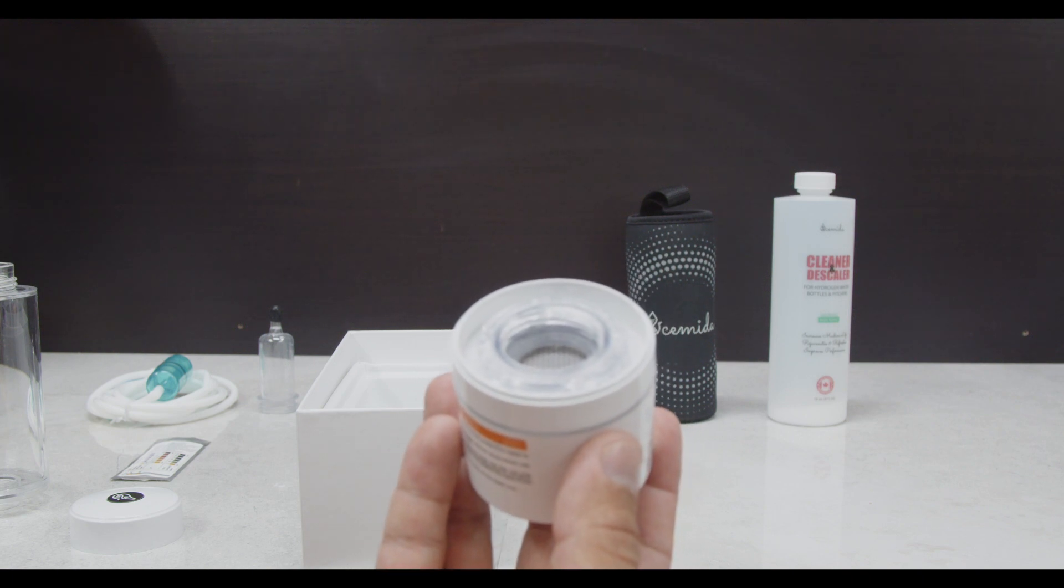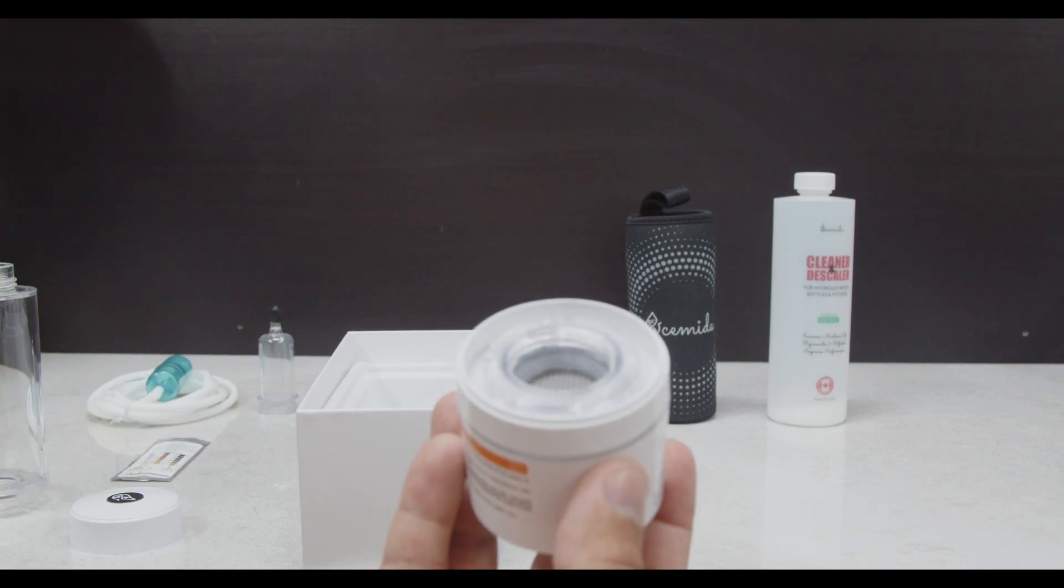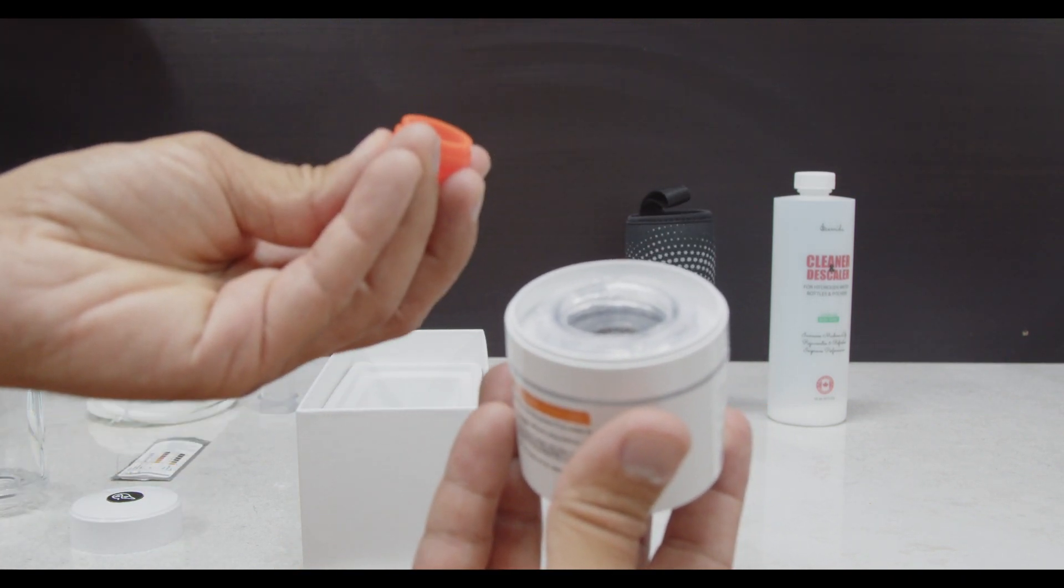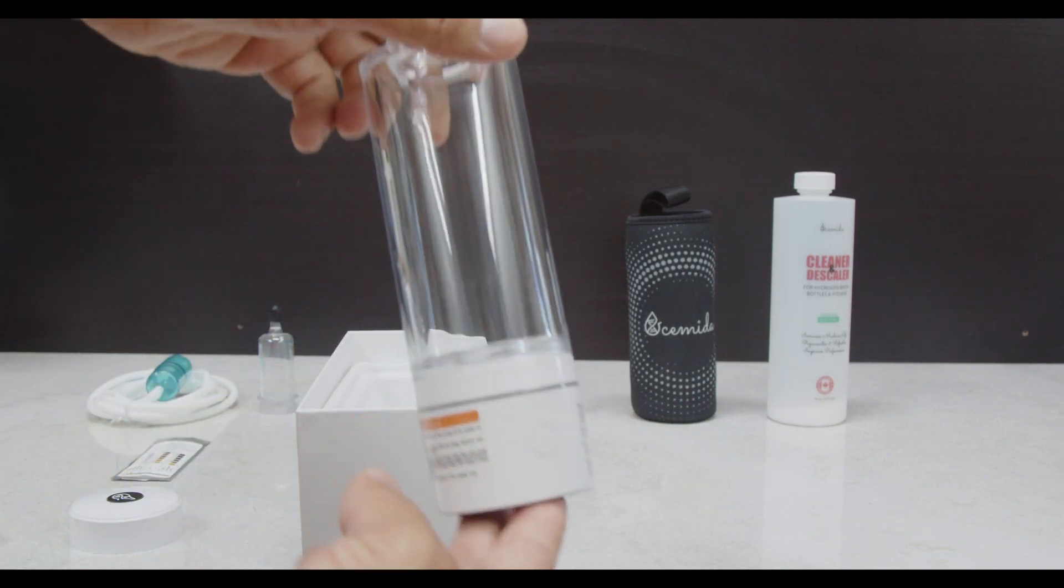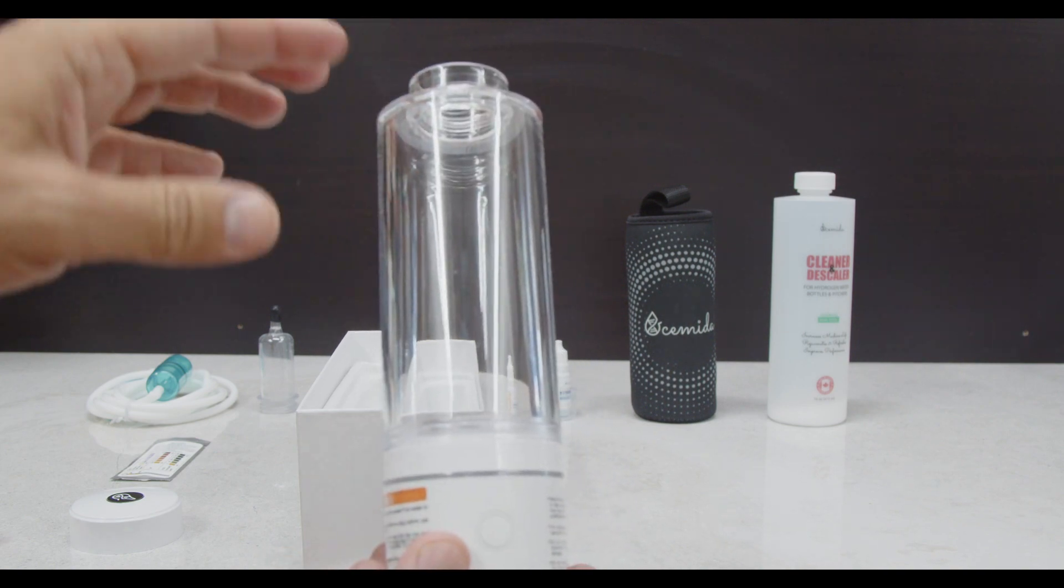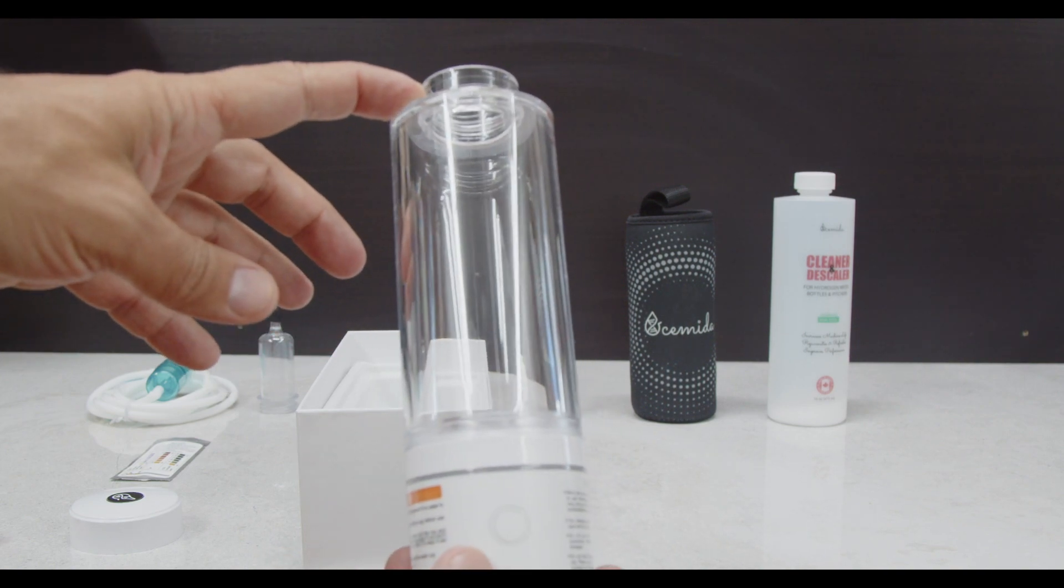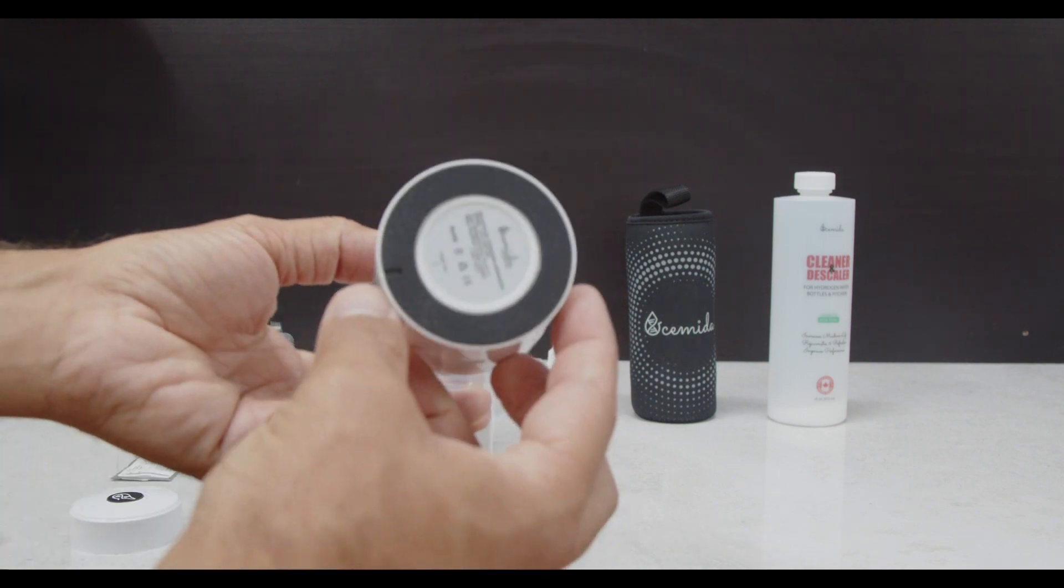The first step in using the device is to remove the plug and then attach the Triton body. This body is made of food-grade plastic, called Triton, which is BPA-free and specifically designed to withstand high pressure. If made of glass, it might shatter, hence the choice of this material.